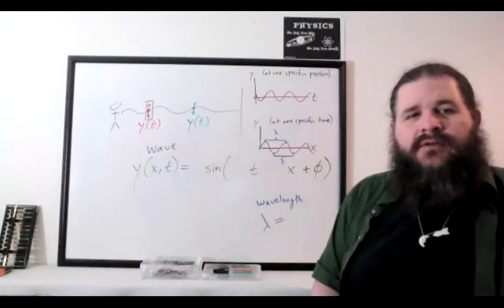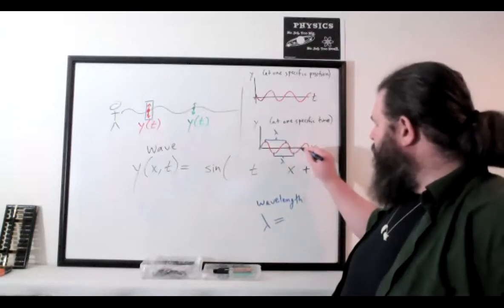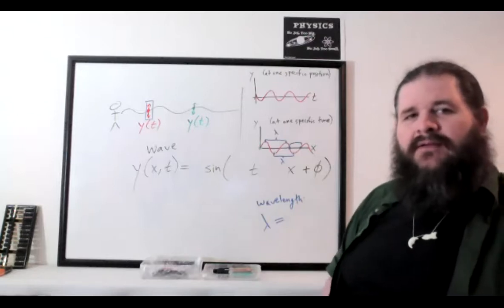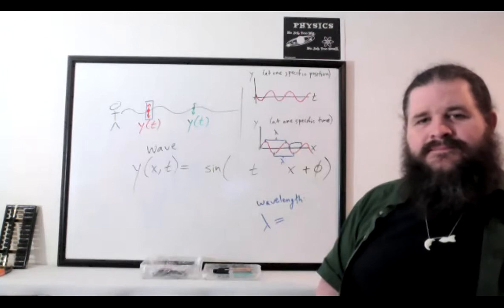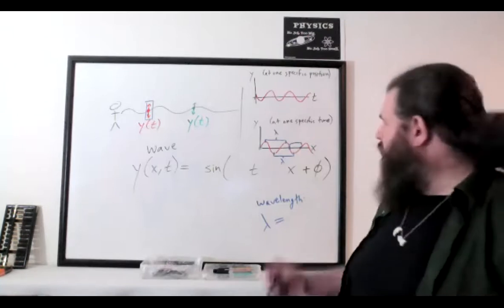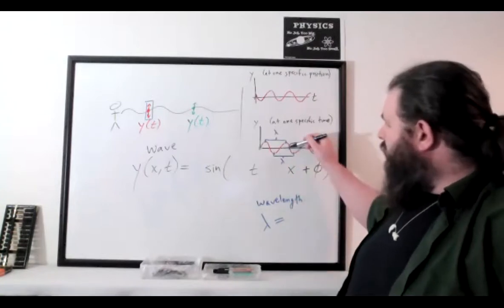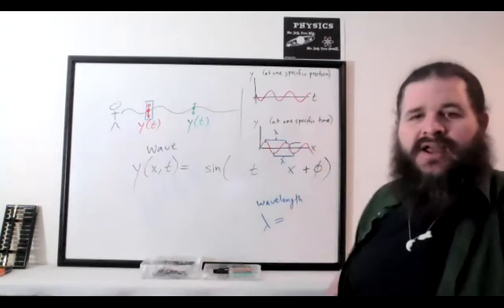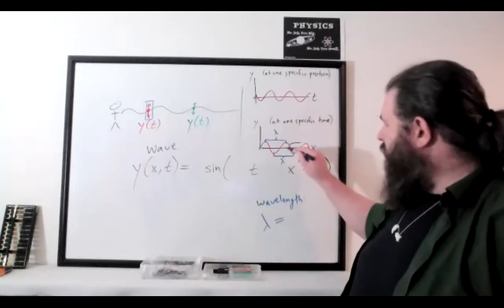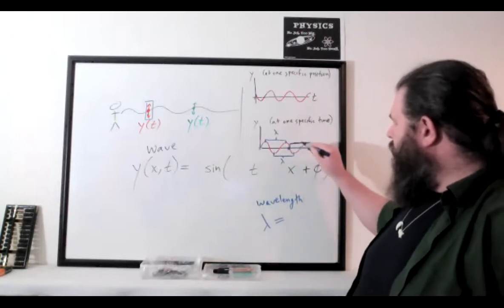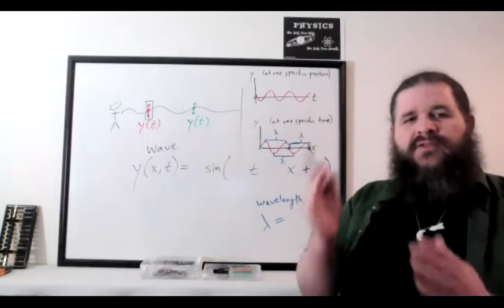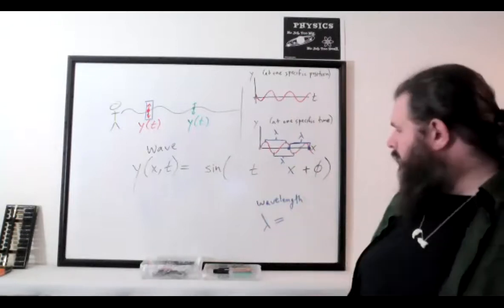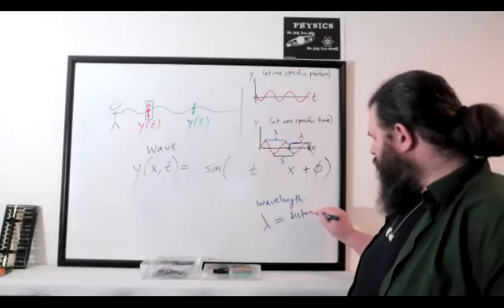To get a full cycle using a point other than crest or trough, you've got to go from, say, equilibrium on the way down to the next equilibrium on the way down. You could also pick two points that are exactly half a cycle apart, measure that distance, and double it. In general, lambda is the distance per cycle. The easiest way to measure it on a graph is to identify two adjacent peaks or two adjacent troughs and measure the horizontal distance between them.